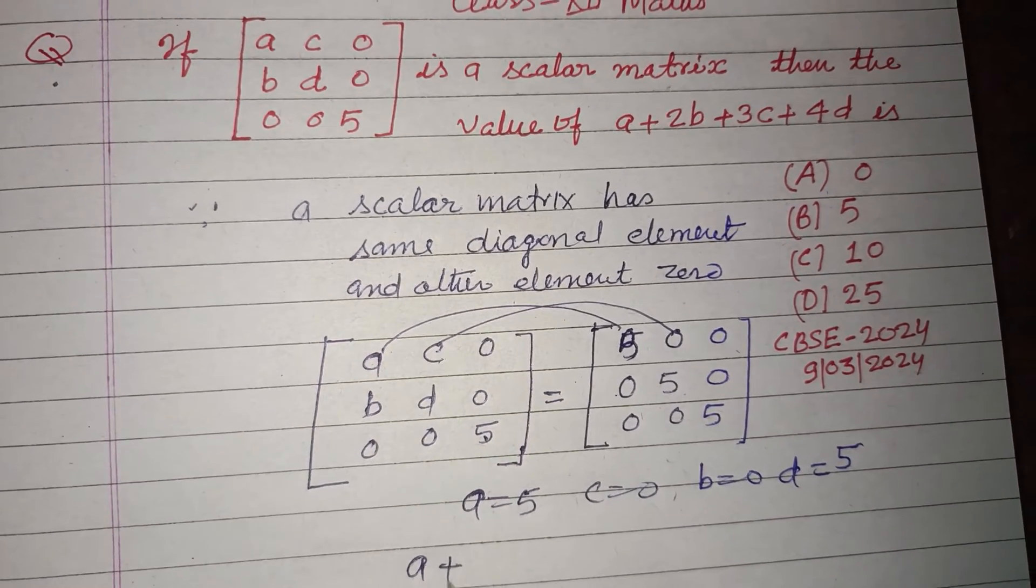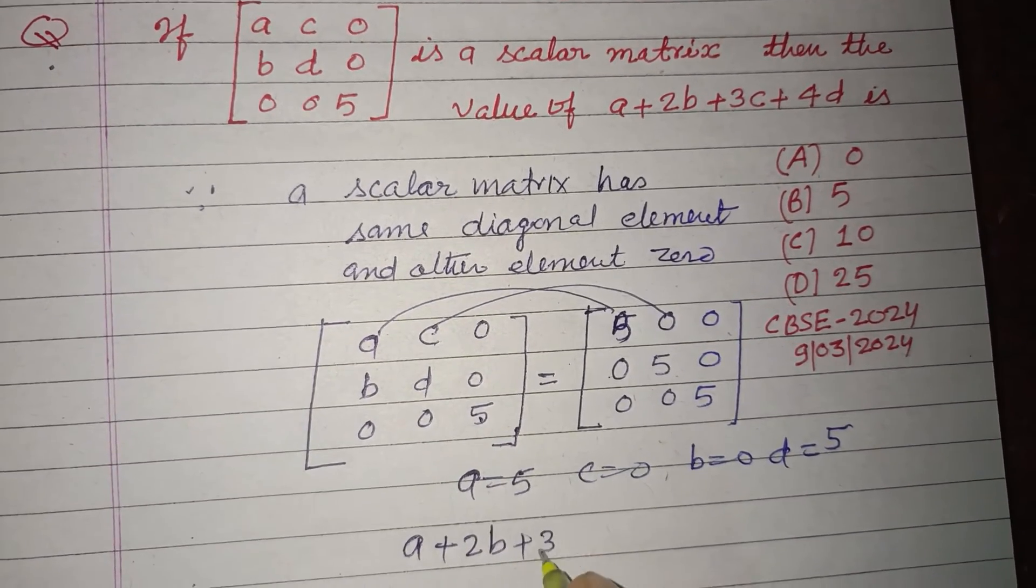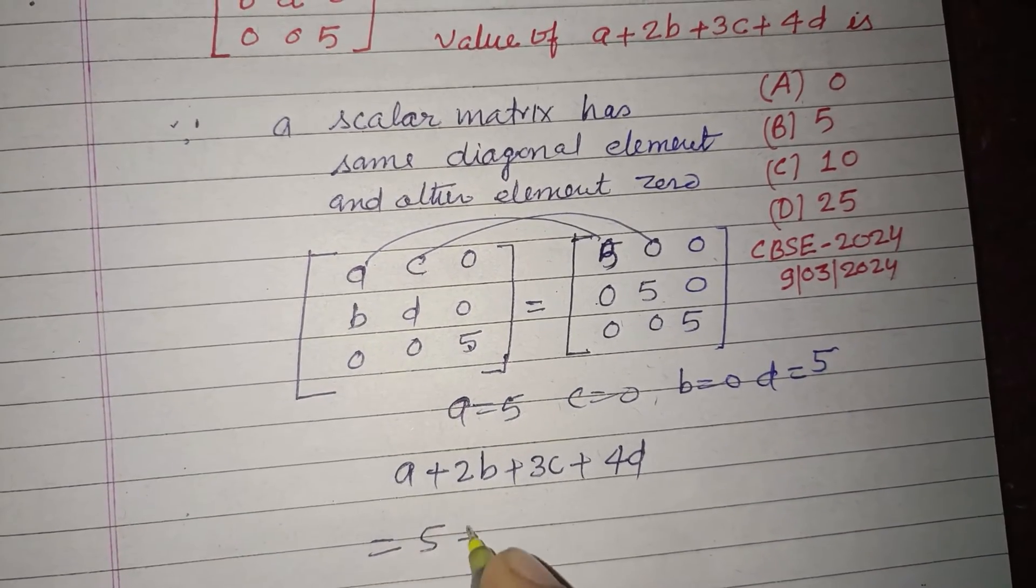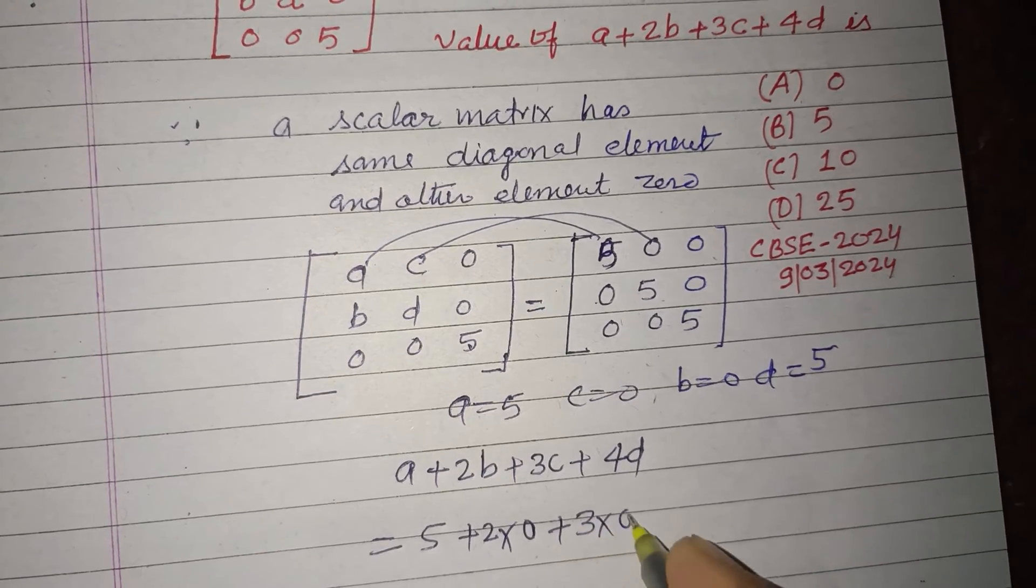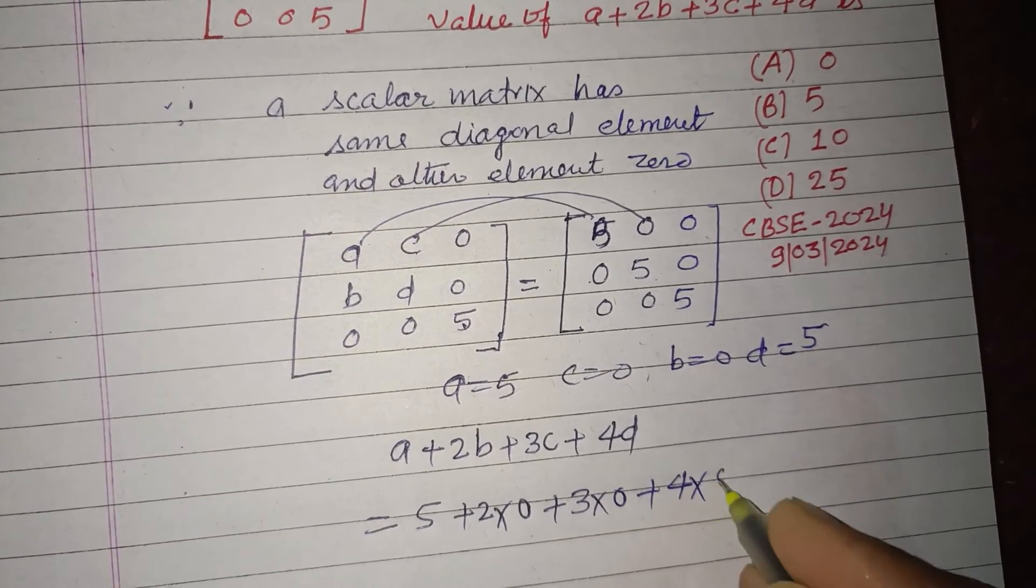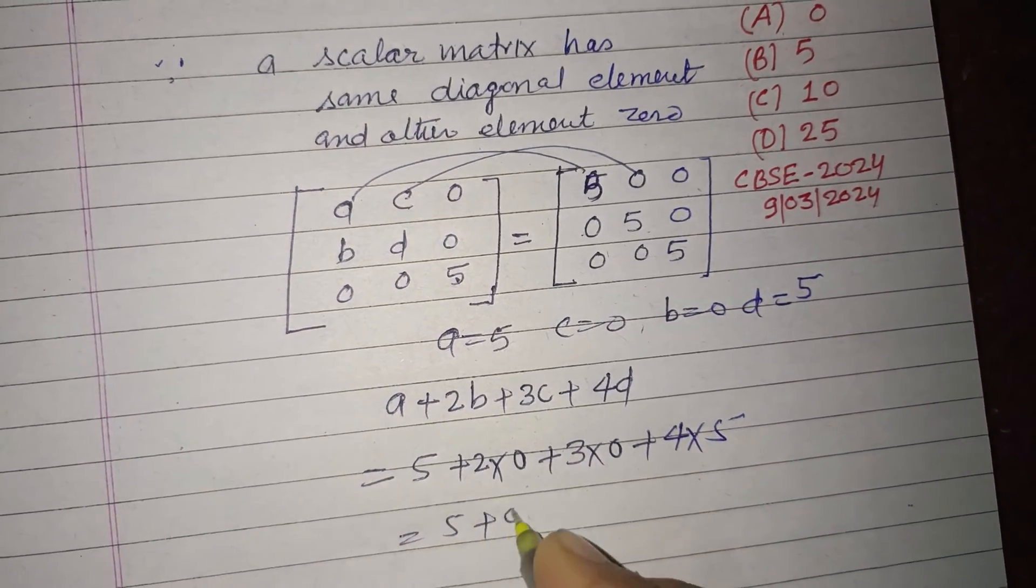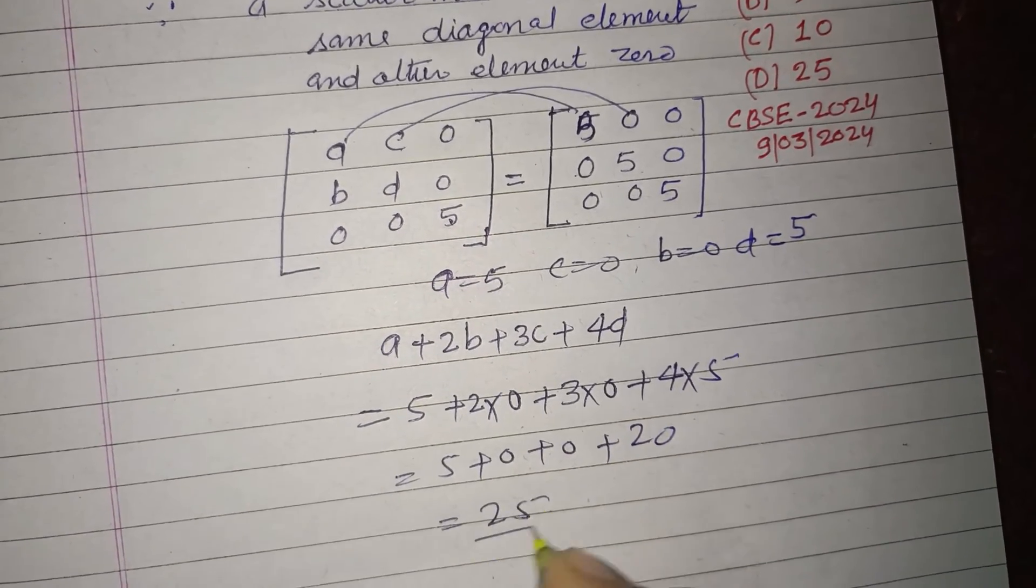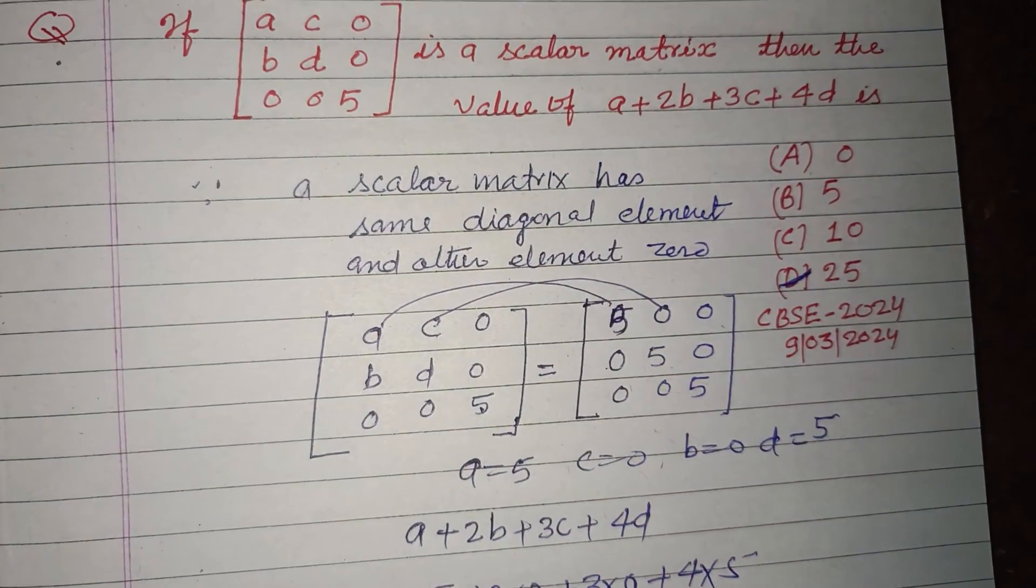The given condition asks for a + 2b + 3c + 4d. So a is 5, b is 0, c is 0, and 4 into d is 5. So 5 + 0 + 0 + 20 equals 25. The correct answer is found in option D.